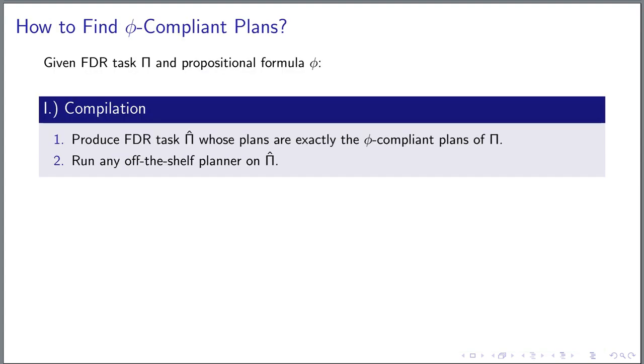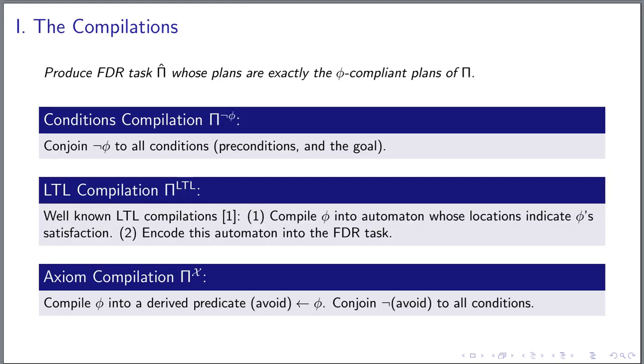To find phi-compliant plans, we follow two different approaches. Given the avoid condition, it is straightforward to produce an equivalent FDR task in which every plan is phi-compliant by construction. The most simple such compilation enforces phi-compliance by simply conjoining the negated avoid condition to all preconditions and the goal.